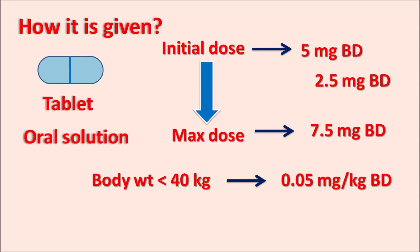In patients with cardiac conduction problems such as sick sinus syndrome, third-degree heart block, severe bradycardia, hypotension, or hepatic impairment, this drug is contraindicated. The drug is available as tablet and oral solution. Initial dose is 5 mg twice daily, which may be reduced to 2.5 mg twice daily. Maximum dose is 7.5 mg twice daily. In patients with body weight less than 40 kg, the dose is given at 0.05 mg/kg twice daily.